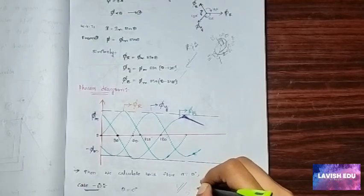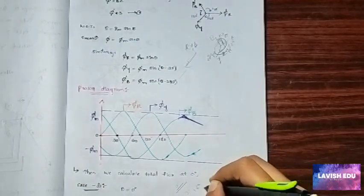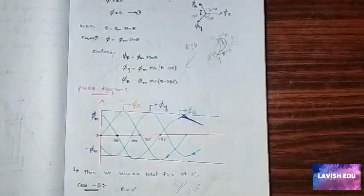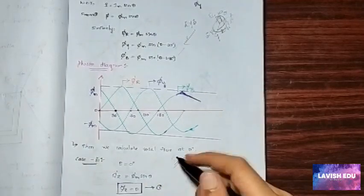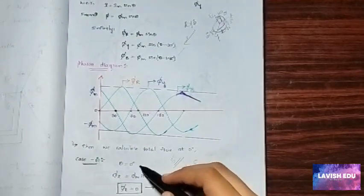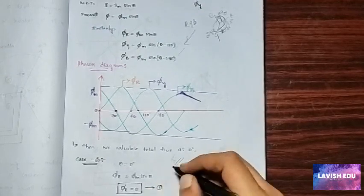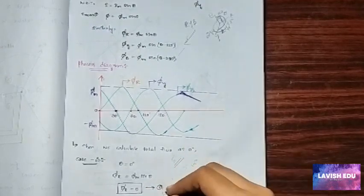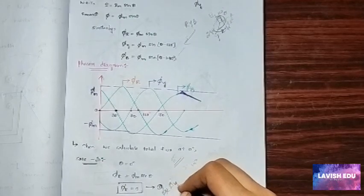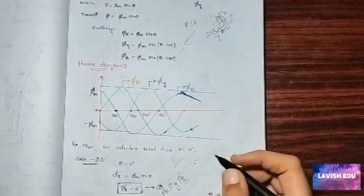Now we will see only for one angle to check whether it is correct or wrong. You can also do for 30 degrees, 120 degrees, 60 degrees, 180 degrees also. First in case one we have considered for zero degrees, θ is equal to zero degrees. Then we calculate for Φr value, Φy value, Φb value.